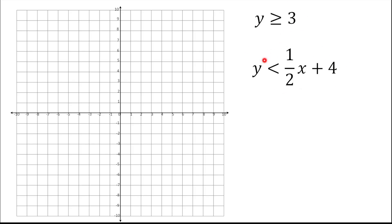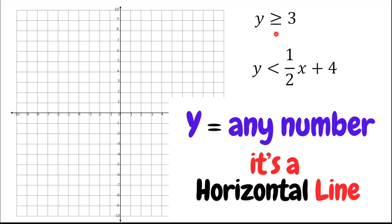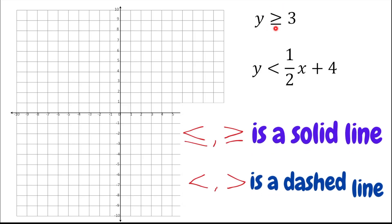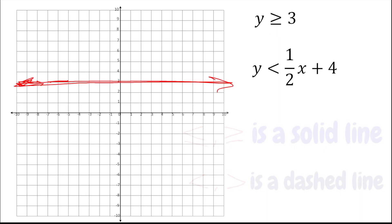We're going to graph the first inequality, which has only one variable. When we have only one variable, the line is either horizontal or vertical. Since the variable is Y, the line is going to be a horizontal line through 3. Also, since the inequality symbol has an equal underneath, my line is going to be a solid line.